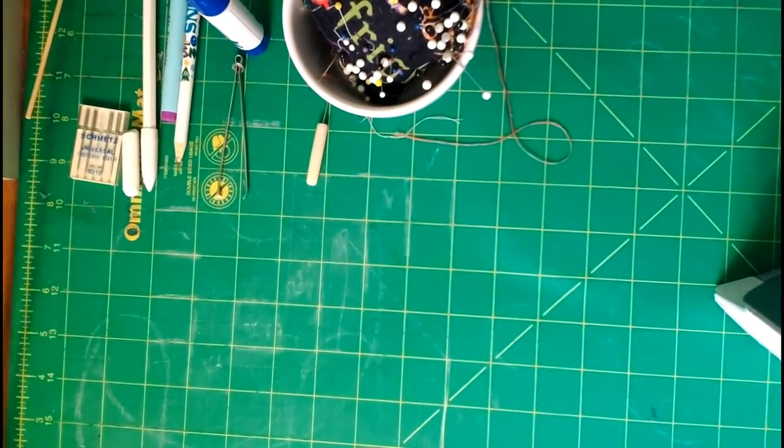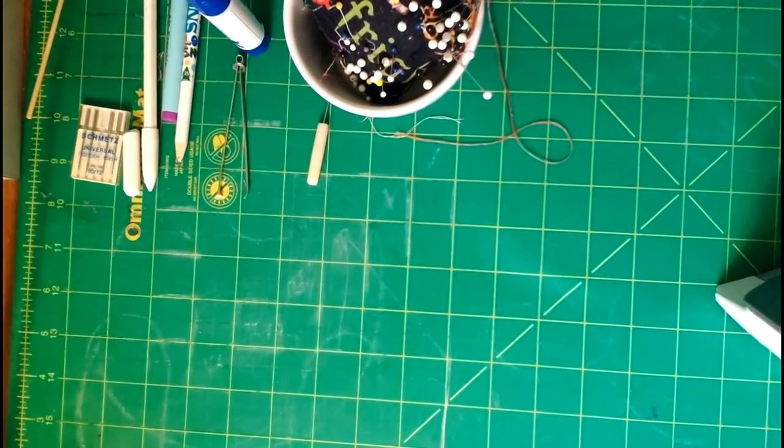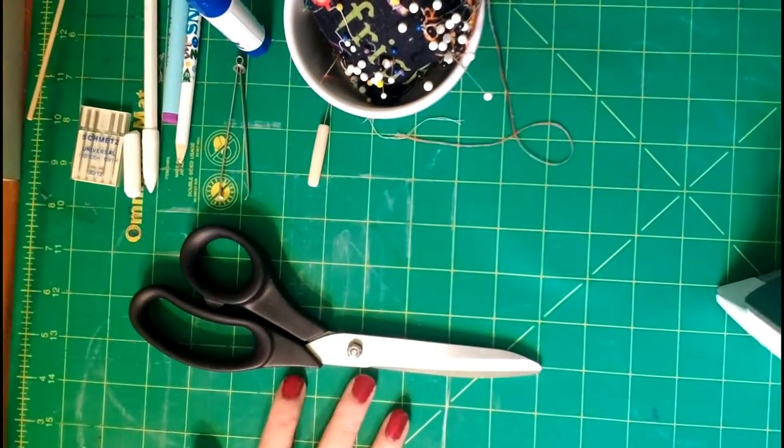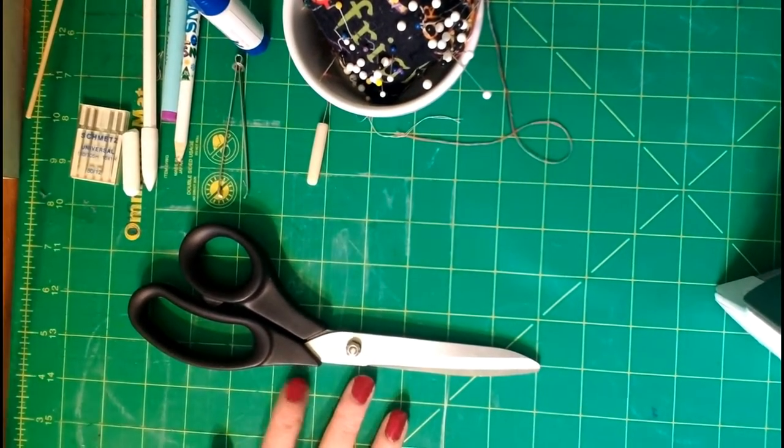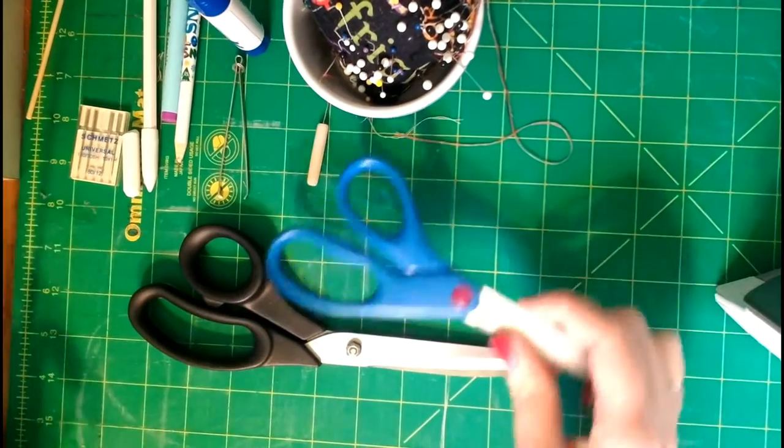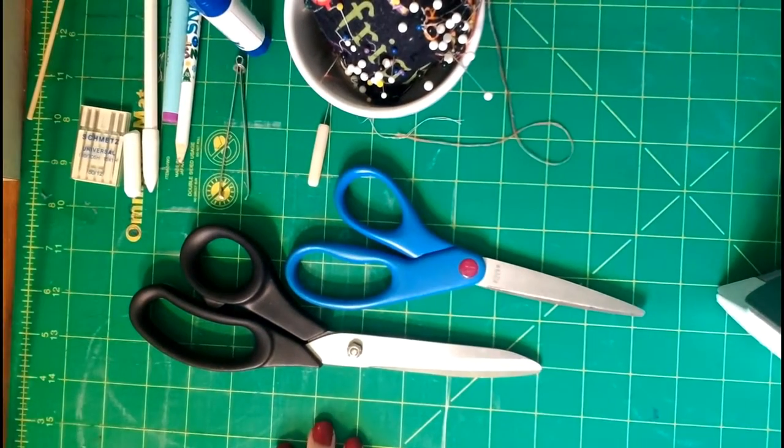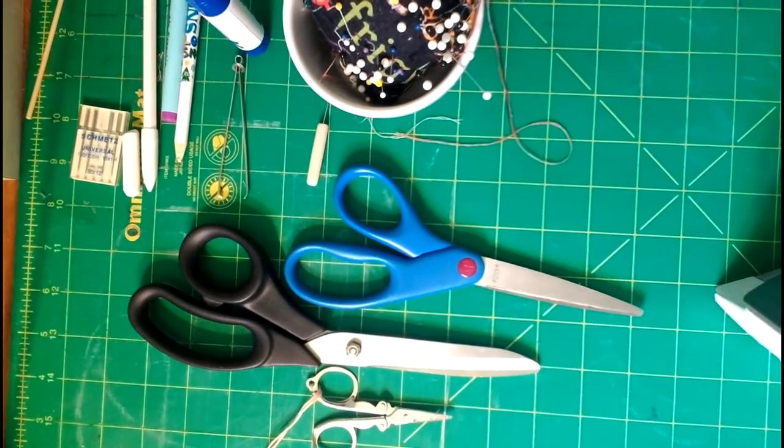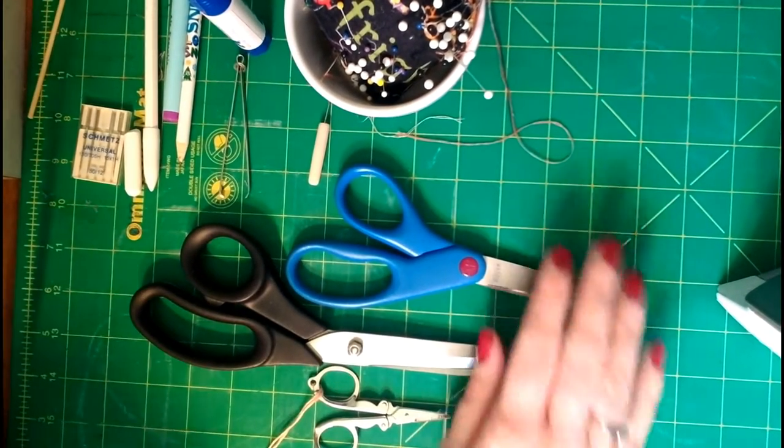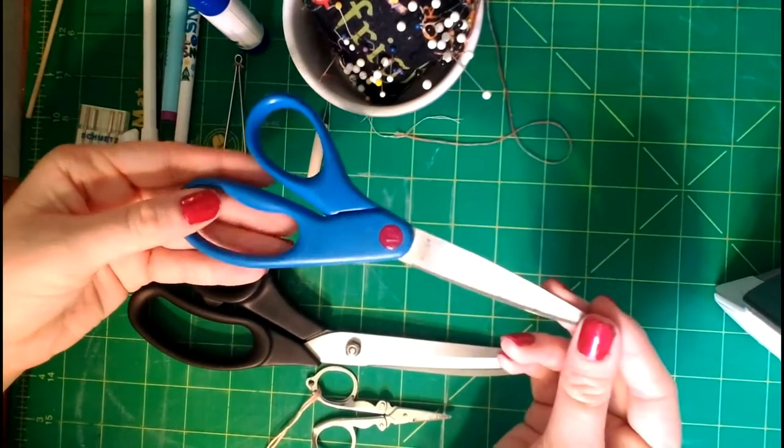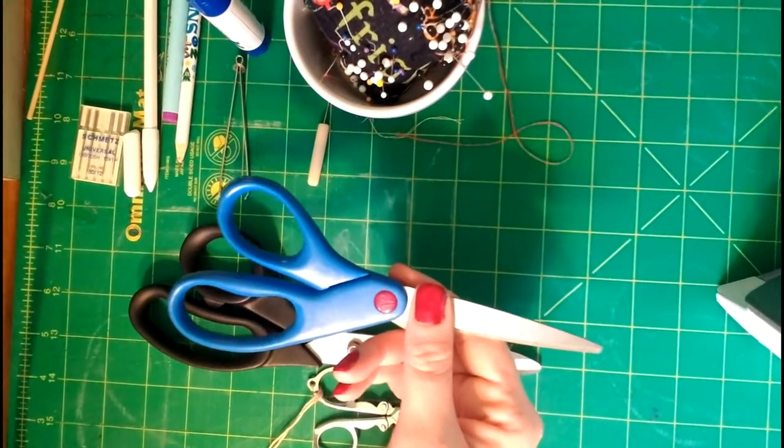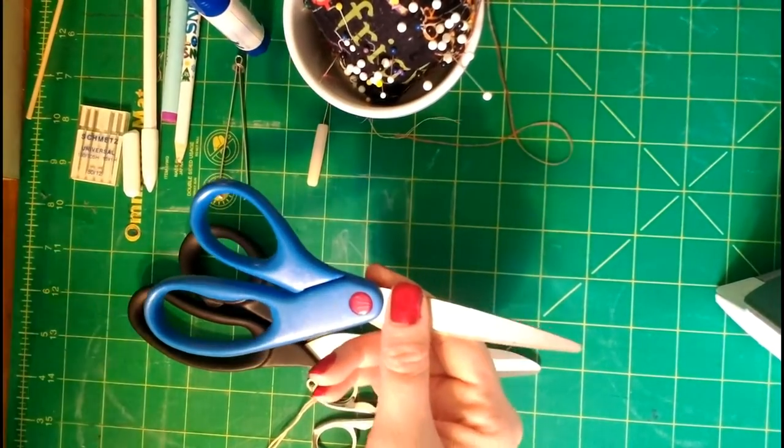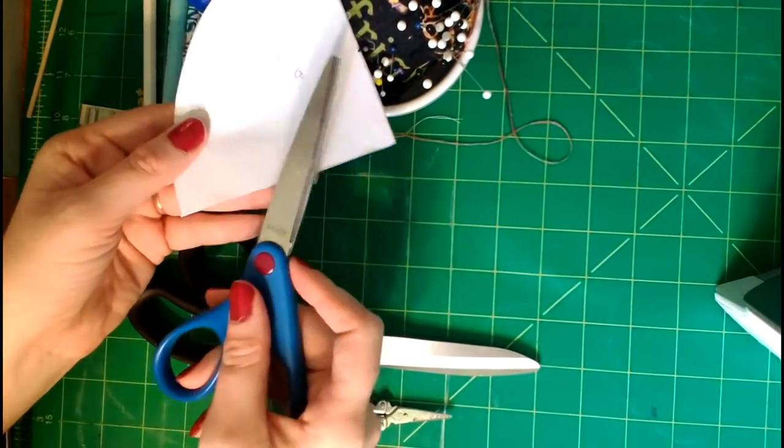So let's talk scissors. I like having at least three close by: a black handled, a blue handled, and little tiny silver ones. These blue handled ones are my paper scissors. They only cut paper. It's especially great for when cutting patterns.